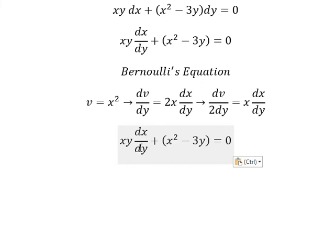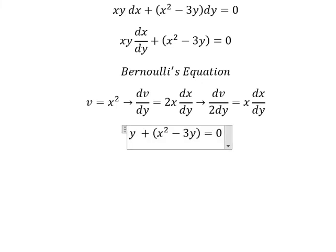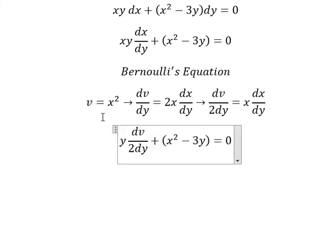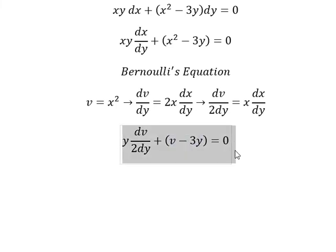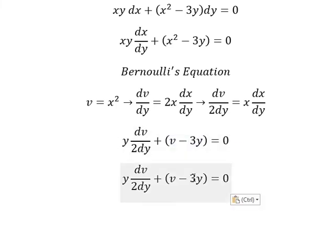So x dx over dy we change for y dv over 2 dy. x square we change for v. Negative 3y we put on the right.